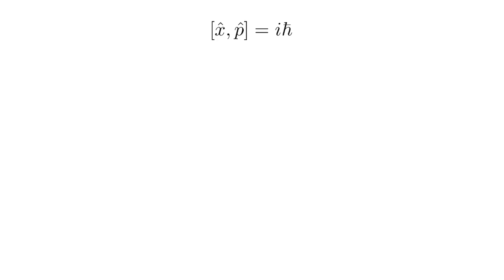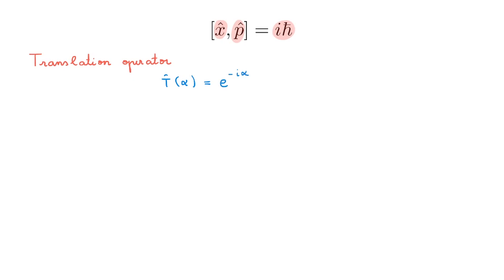To study the translation operator, we need to start by considering the position x and momentum p operators, whose most important property is their commutator, which is equal to i h-bar. We define the translation operator as T(α) = e^(−iαp/ℏ), where α is a real parameter.